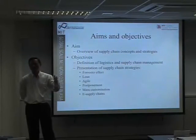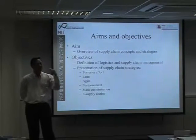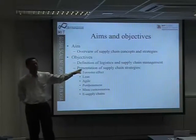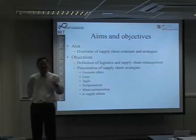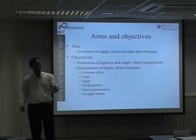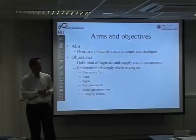Logistics management focuses more on operational issues — storage, transportation, and so on. Whereas supply chain looks at supply chain design: which warehouses should we have, which factory should we use? These are very strategic decisions. If you ask which warehouse or how many warehouses, that's the supply chain department's decision. They look at supply chain configuration. This is one of the key differentiations between supply chain management and logistics.